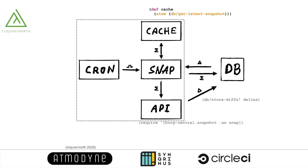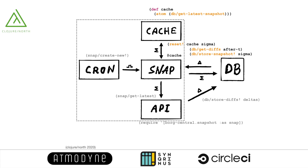We'll use a Clojure Atom for the cache and initialize it with the latest snapshot value available in the database when the server starts. When cron calls create-new, Snap will fetch all the telemetry and get the latest snapshot from the cache — no database call. It will compile a new snapshot, store it in the database, and also update the cache with the new Sigma. When a drone requests the latest snapshot, instead of a database trip, Snap will simply deref the cache. We can probably serve 5,000 units and more with this setup.